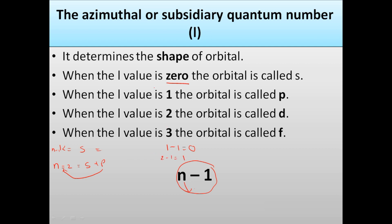For d, which comes in n = 3, the value is 3 minus 1 = 2, so the l value for d is 2. For f, which comes in n = 4, the value is 4 minus 1 = 3, so the l value for f is 3. Remember that the number of orbitals increases with increase in shell number n.